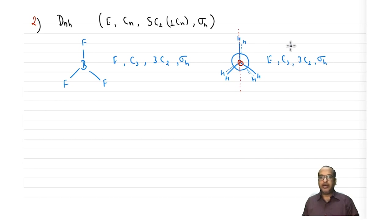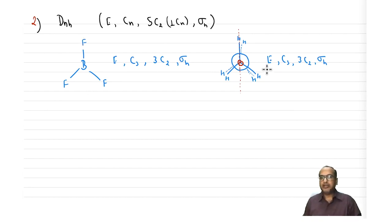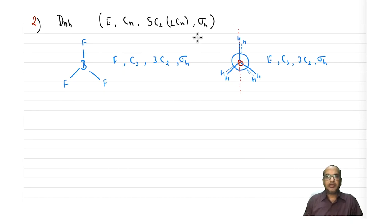In addition, eclipsed ethane also has σv or σd planes, but E, Cn, n C2s, and σh are the necessary and sufficient conditions to fall under the Dnh category. Let us now see the next category in dihedral point groups: Dnd.